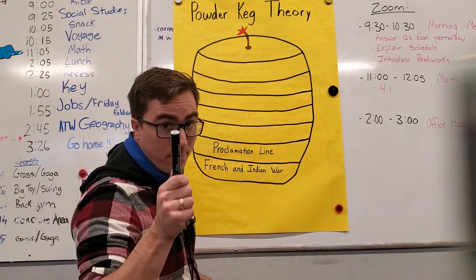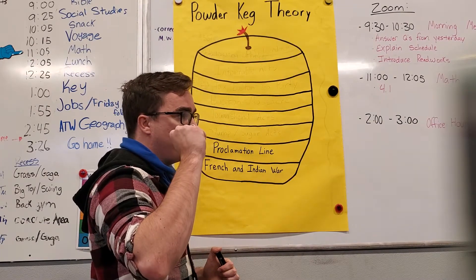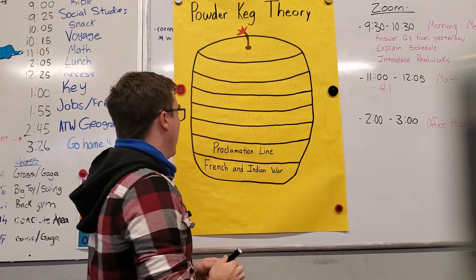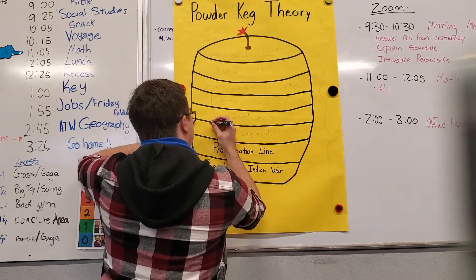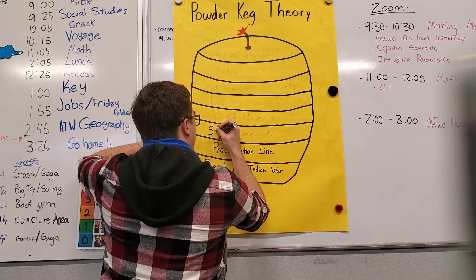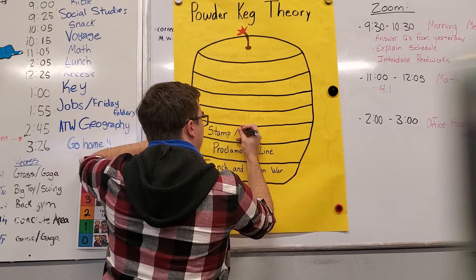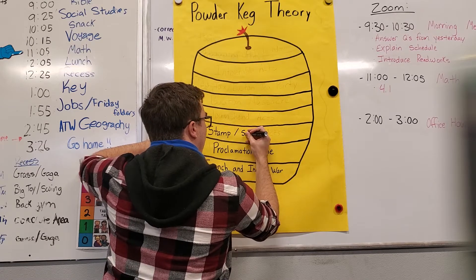And on top of that, because the French and Indian War, Britain got into a ton of debt. With that, they decided, you know what, let's start taxing the colonies. And so what they did was they started with the stamp and sugar acts.